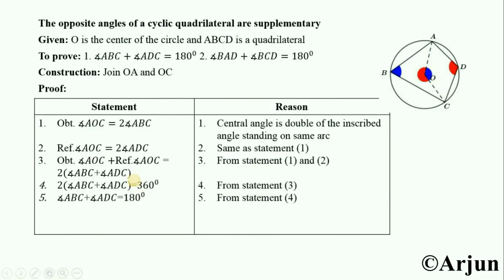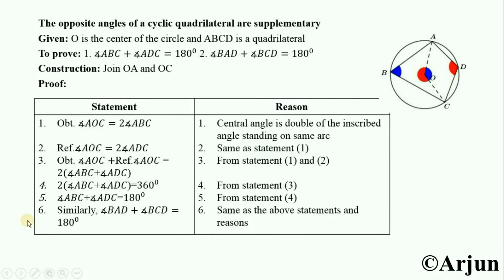So we can write angle ABC plus angle ADC equals 360 divided by 2, that is 180 degrees, from statement number four. Similarly, angle BAD plus angle BCD equals 180 degrees. If we join BO and DO and repeat the same process from steps 1 to 5, we get angle BAD plus angle BCD equals 180 degrees, with the same statements and reasons. Thank you for watching.